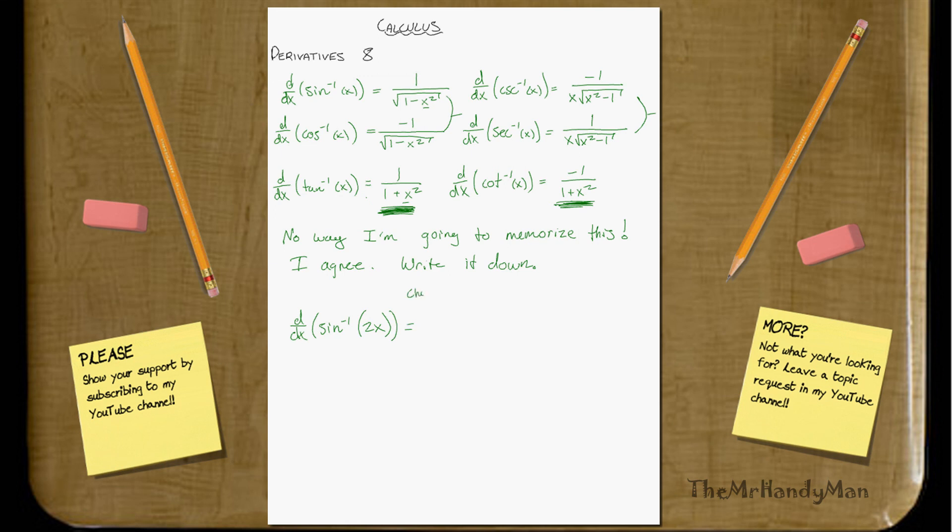Notice that this one would be the chain rule due to the 2x, right? And then also inverse function, which I'll just put if right here. And you just need to realize that all these x's that you see in the upper part of this page, you just replace them by what was inside the parentheses.